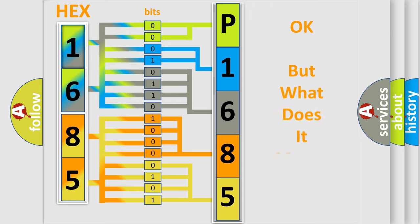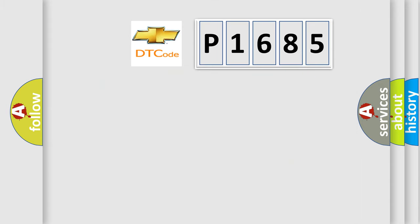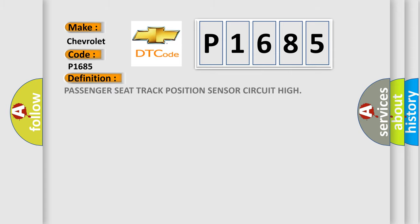The number itself does not make sense to us if we cannot assign information about what it actually expresses. So, what does the diagnostic trouble code P1685 interpret specifically for Chevrolet car manufacturers? The basic definition is: passenger seat track position sensor circuit high.